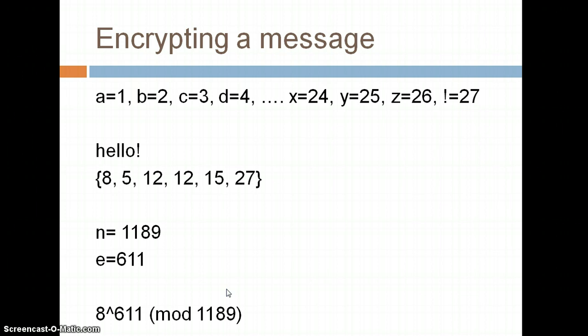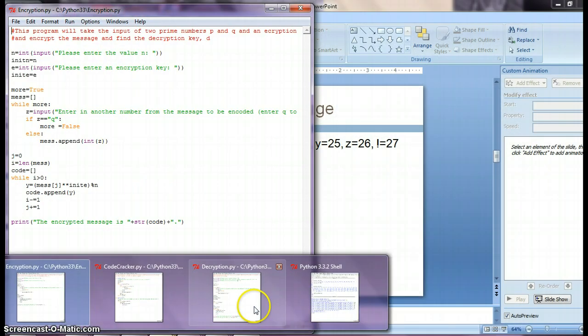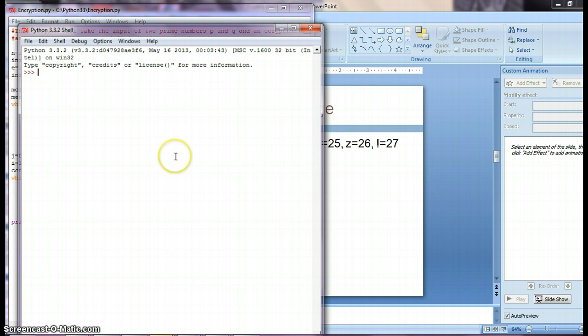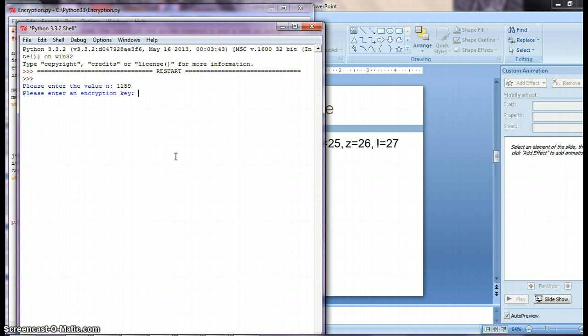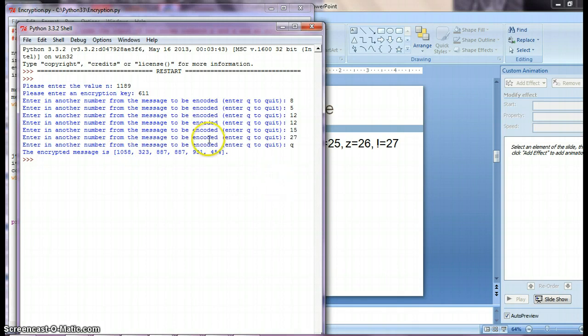To change 8 to the encrypted text, I would just take 8 to the 611th power mod 1189, and then I do that with 5, 12, and so on. I'm going to show you the program I made that does this. It takes each number in the message to the power of the encryption key mod n, which in this case is 1189. Enter in the message, and there is my ciphertext, or the encrypted message.